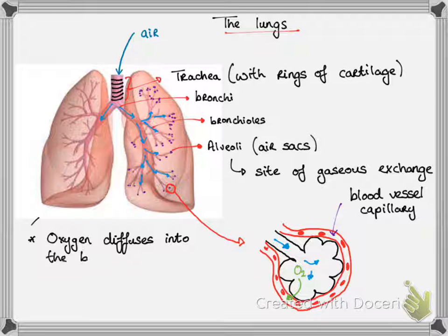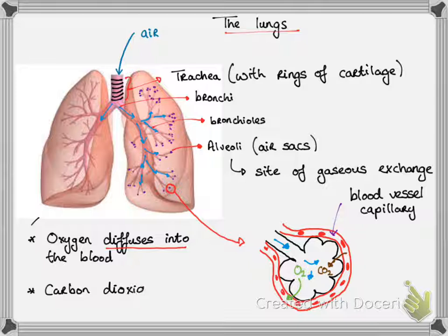Now remember the air is full of oxygen. So oxygen diffuses into the blood where there's less of it. Because the body cells have undergone respiration, there will be a lot of carbon dioxide in the blood. However, there will be less in the alveoli or in the air, so carbon dioxide diffuses out of the blood.